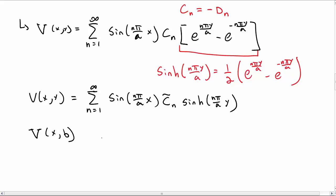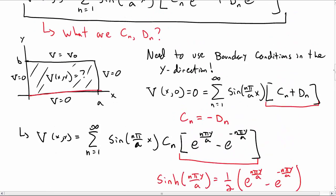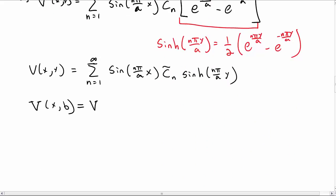Let's impose our other boundary condition at y equal to b. So at y equal to b our boundary condition is V is equal to V_0. And so now we put y equal to b in our solution here.